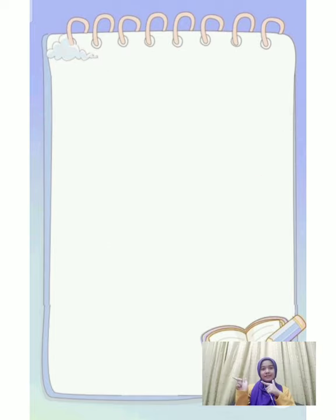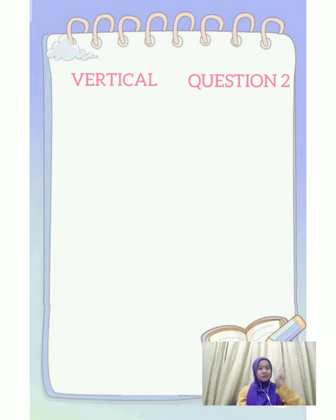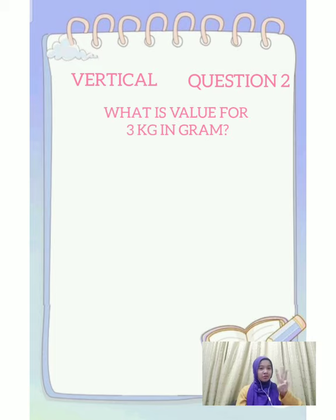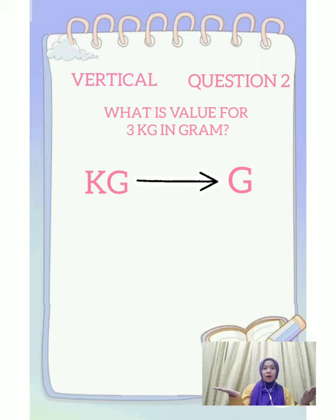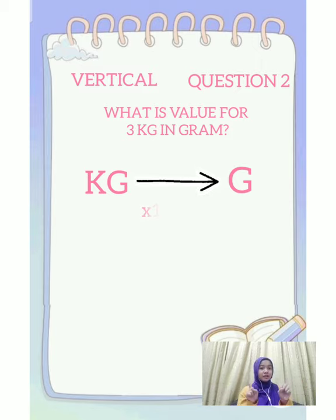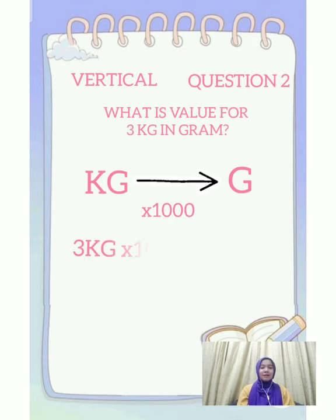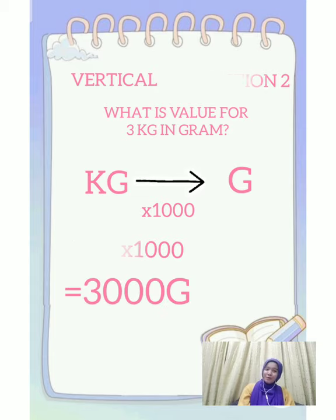Next, vertical part, question number two: what is the value of 3 kg in grams? If you want to change kilograms to grams, we must multiply the number by 1,000. So, 3 kg multiplied by 1,000 gives us 3,000 grams.